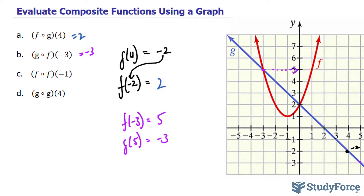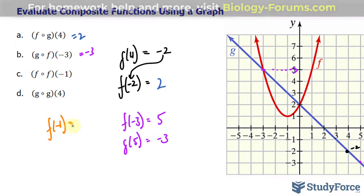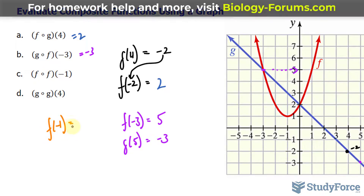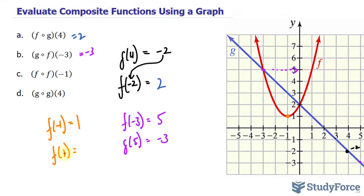Now we have f composed of f. So f at negative 1, according to this graph, is 1. And now we find out what f at 1 is. f at 1 is 5.